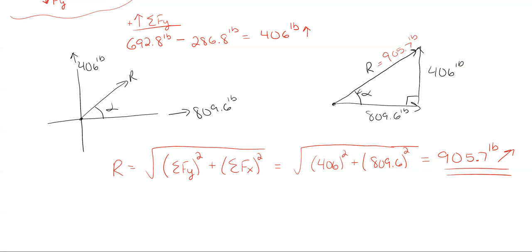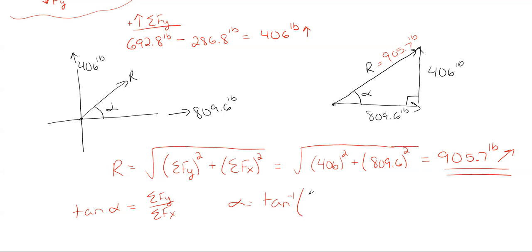The last thing I need is my angle. The tangent of that angle equals the summation of fy over fx if I want the angle from the x direction. Rearranging and taking the inverse tangent: arctan(406 / 809.6) gives me an angle off of the x of about 26.6 degrees.